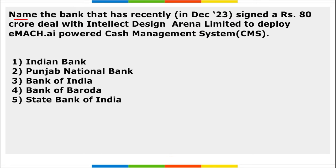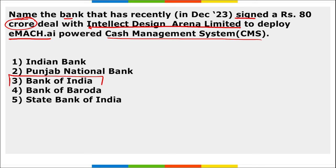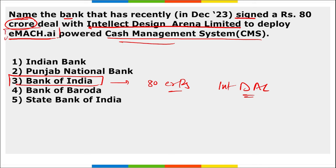Next: name the bank that has recently signed an 80 crore rupees deal with Intellect Design Arena Limited to deploy the eMACH.ai powered cash management system. It is Bank of India. Bank of India signed an 80 crore rupees deal with Intellect Design Arena Limited to deploy an eMACH.ai powered cash management system.